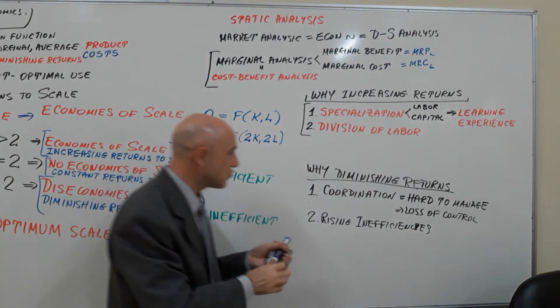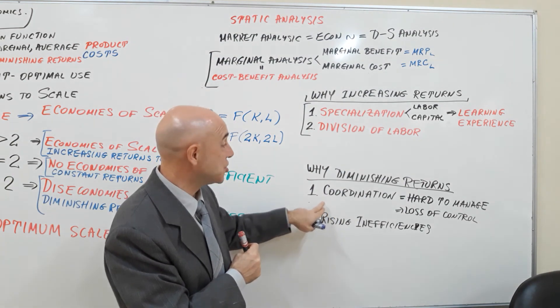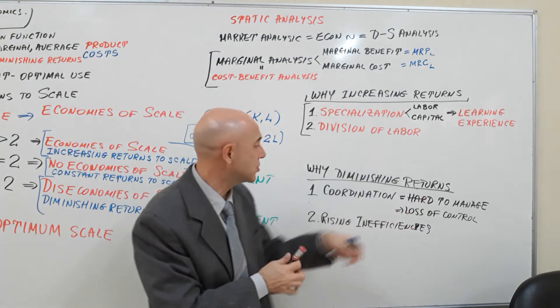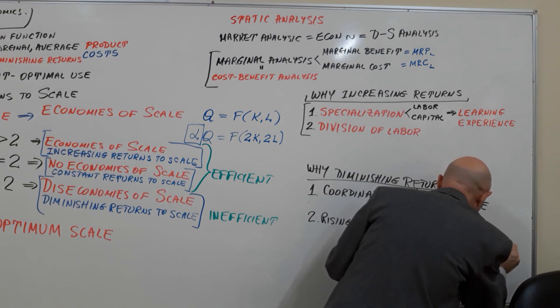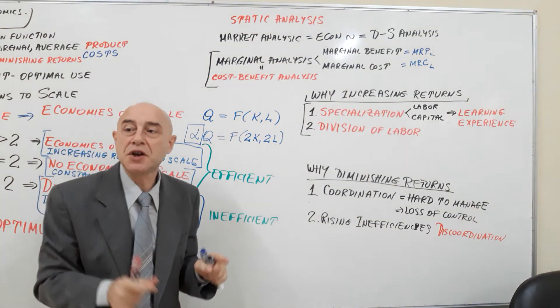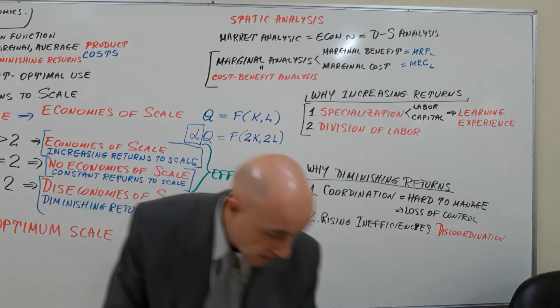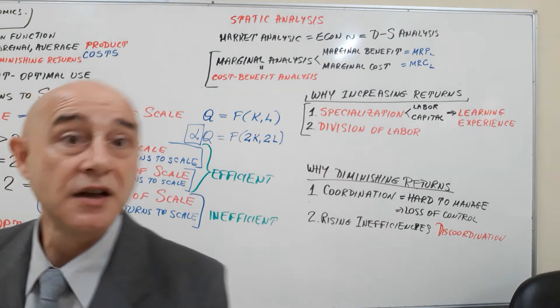Now these inefficiencies rise because it's called lack of coordination, difficult to coordinate. Again, difficult to manage, hard to control. We call this discoordination. Suddenly it's not clear who is responsible for what. So that finished my section.